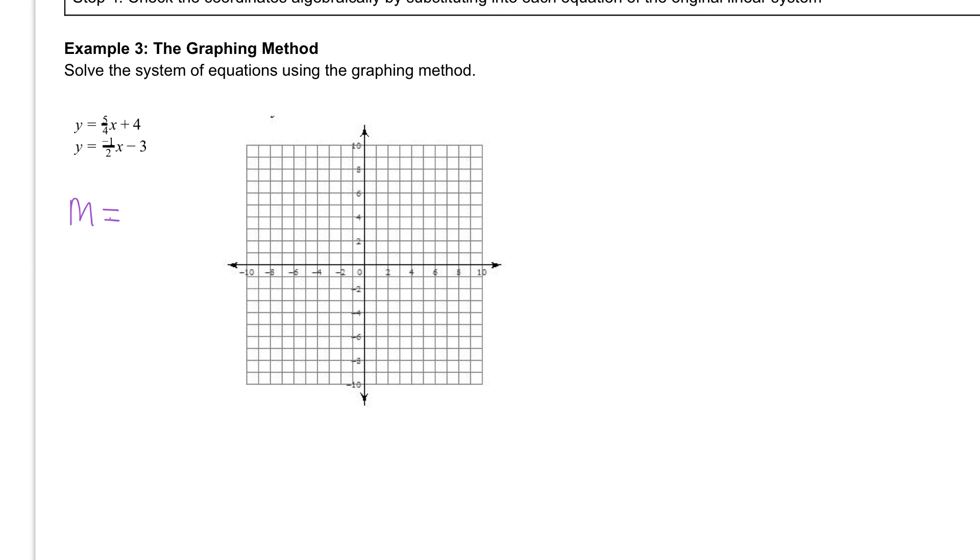Remember the slope of that line, m is the number in front of the x, and that's 5 over 4. And that tells us that we are going up 5 and right 4 to graph it quickly. And then we need our y intercept. Our y intercept is 4. So that's going to be the point 0 comma 4.